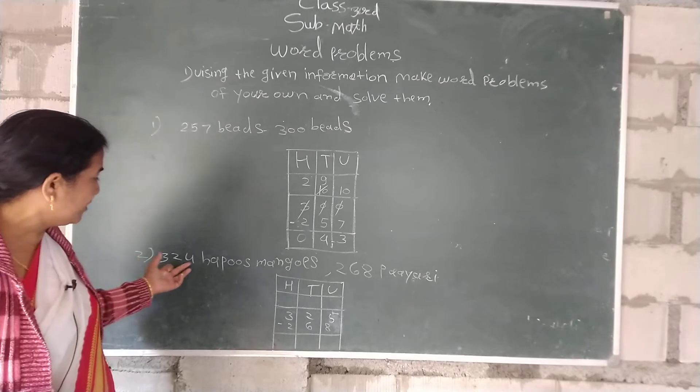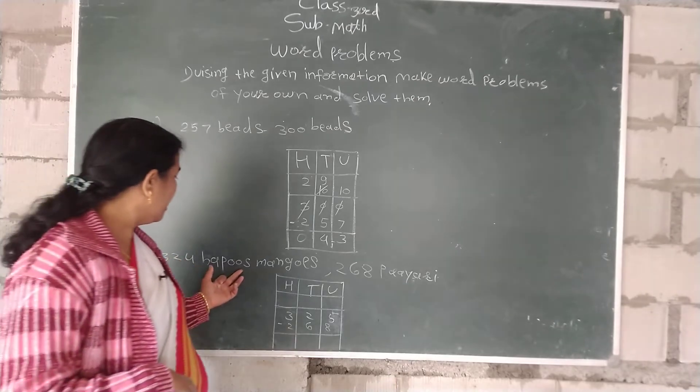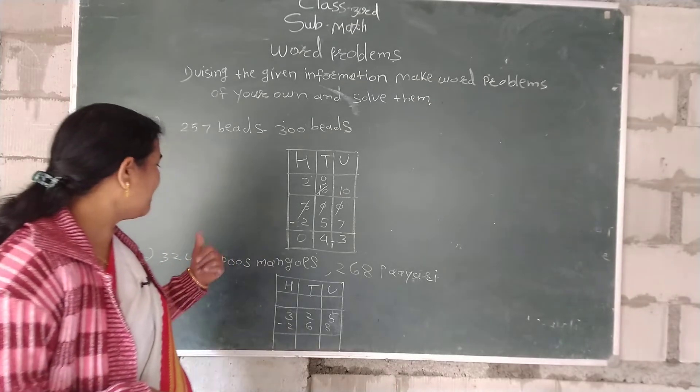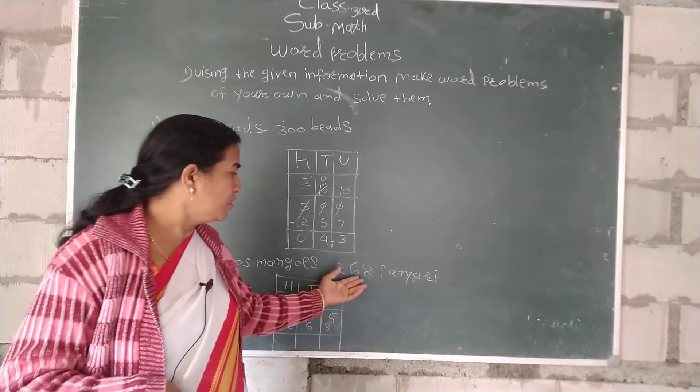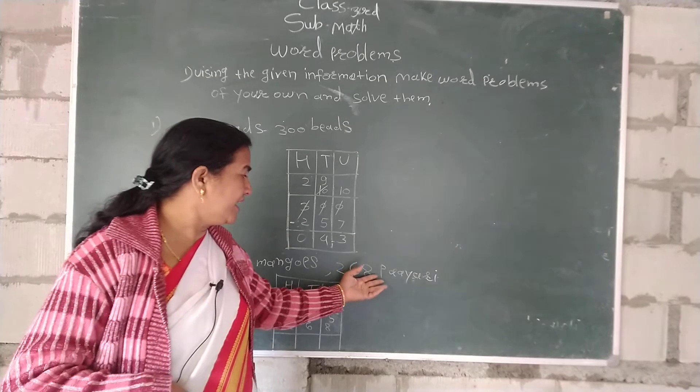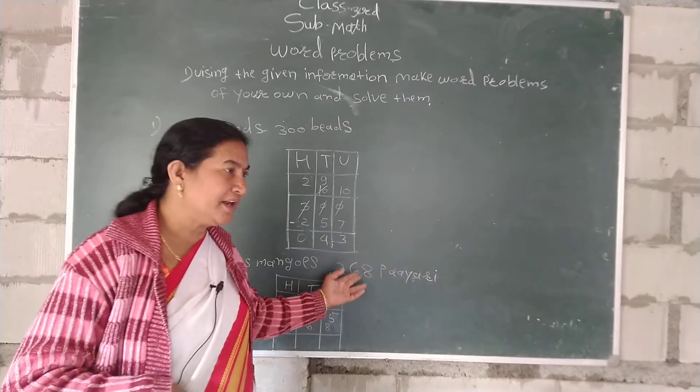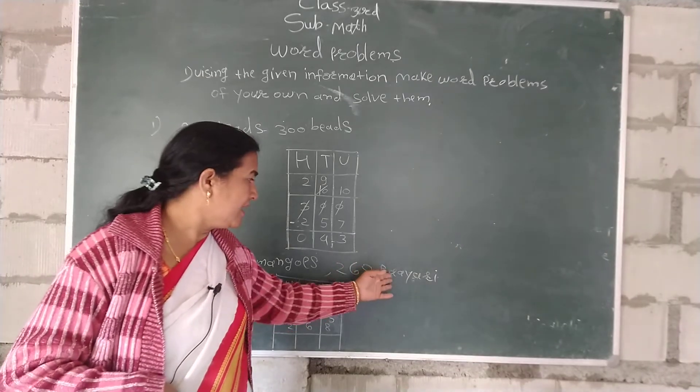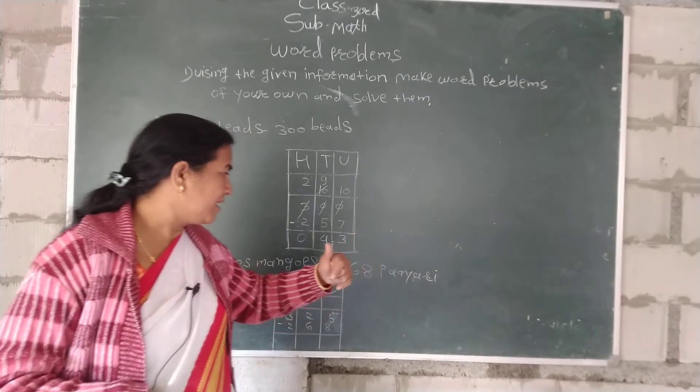324. Hapu Sambe, mangos. 2. 268. Papaya.